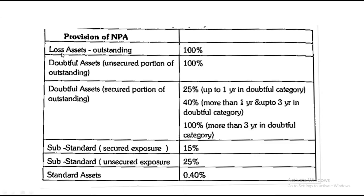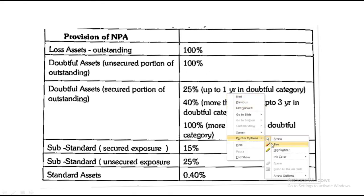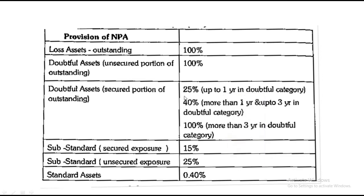There are rules for provision. Number one: for loss-making assets which are still outstanding, the provision is 100%. For doubtful debts, it is also 100%. For doubtful debts up to one year, it is 25%. More than one year but up to three years, it is 40%, and three years and above it is 100%. For substandard secured loans, provision is 15%; for substandard unsecured exposure, it is 25%; and for standard assets, it is 0.4%.